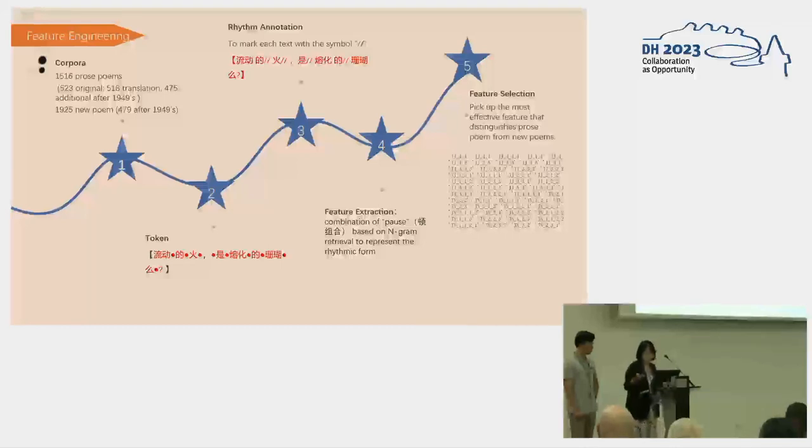That is, if we want to find the most effective formal features that distinguish prose poems from neo-poetry, we first train a two-class classifier with the labeled corpus. And then, when the accuracy is highest, we pick up the most effective features by logistic regression. In addition, these features were used for further text similarity testing and close reading analysis.